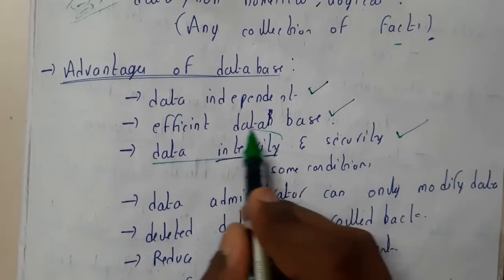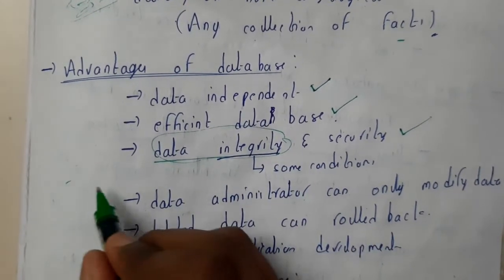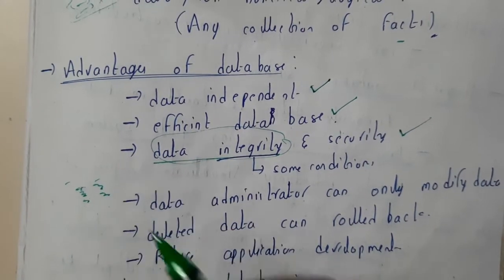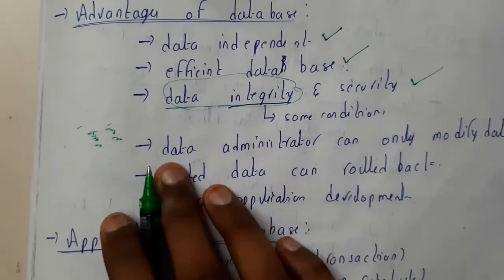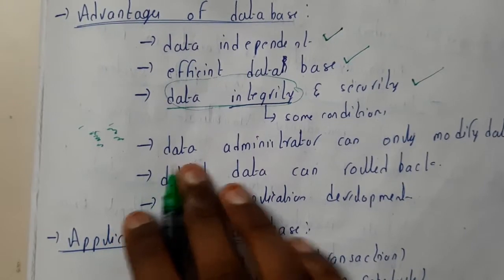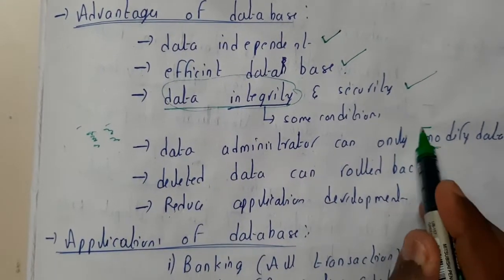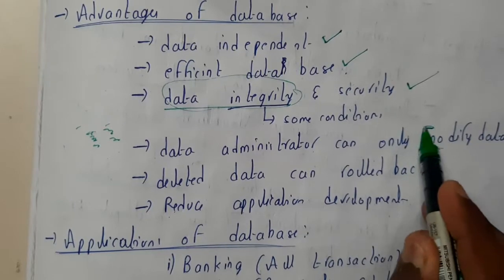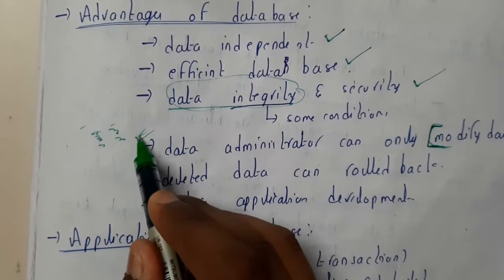Integrity constraints are conditions — for example, the first letter should be capital, the roll number should not repeat, the card number should be unique, and so on. The database administrator is the only one who can modify the data, as he is the only one who has the necessary rights and permissions.